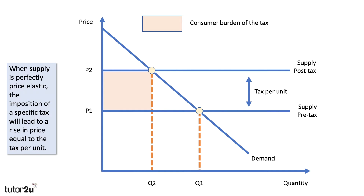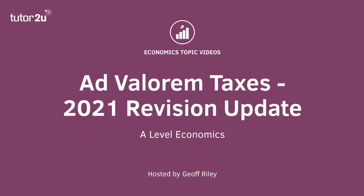When supply is perfectly elastic, the price has gone up from P1 to P2 by exactly the distance of the tax, so the consumer pays all of the tax. This is often the case with mass-produced goods — think about the sugar levy. If you're producing bottles of Coca-Cola or Fanta or Dr Pepper at the same marginal cost and a tax is placed on the producer, in most cases they'll pass on the tax to the consumer. The impact on quantity depends on the elasticity of demand. In our next video we'll focus for a few minutes on ad valorem taxes.